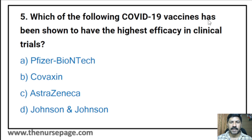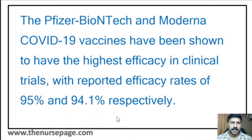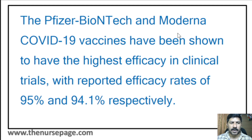Fifth question: Which of the following COVID-19 vaccines has been shown to have the highest efficacy in clinical trials? Pfizer-BioNTech, Covaxin, AstraZeneca, or Johnson & Johnson? The correct answer is Pfizer-BioNTech, which showed the highest efficacy at around 94-95%. The Pfizer-BioNTech and Moderna vaccines have reported efficacy rates of 95% and 94.1% respectively.